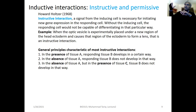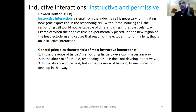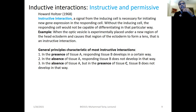When you have one kind of signal being produced and received by responders, and responders respond by changes at the level of gene expression, such an interaction is called instructive interaction. Instructive interaction means you have one signal, and that signal results in specific gene expression changes in cells that receive it.